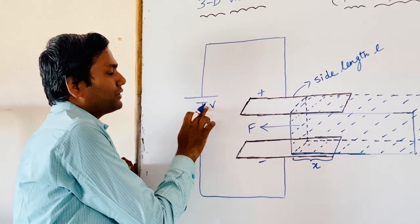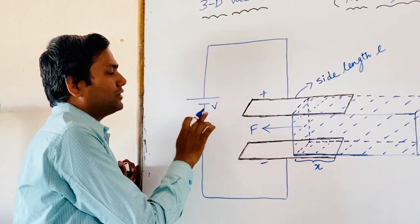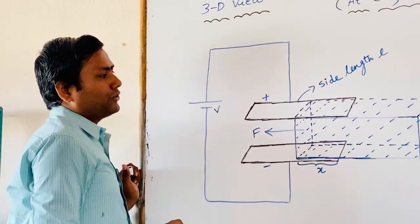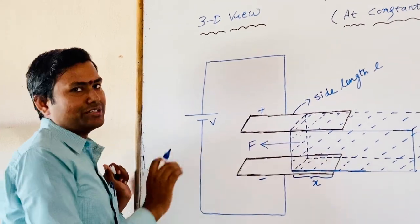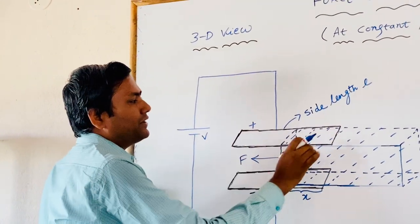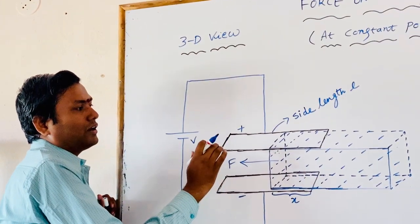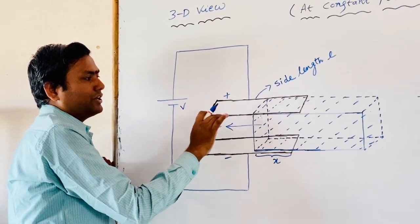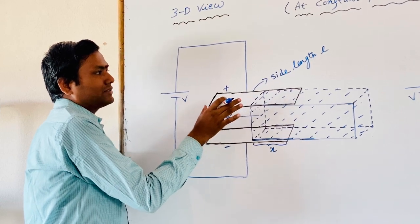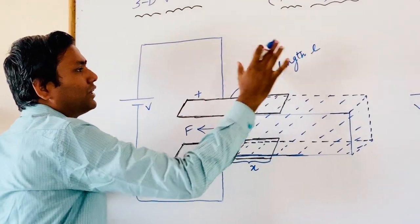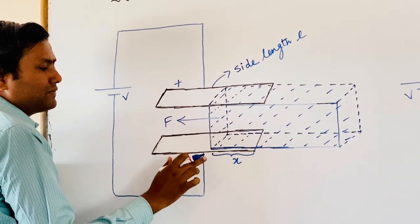So here, the potential difference is V and the plates are also charged to that potential difference V. Now assume these capacitor plates are square in shape. Even though this is a 3D diagram — here I am showing you a 3D view — it may look rectangular or parallelogram in shape, but remember this is a square plate of side length L, and this is also a square plate of side length L.